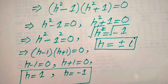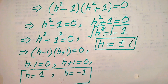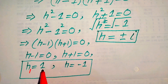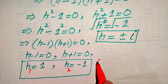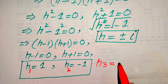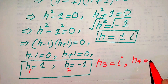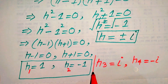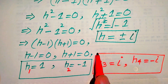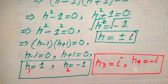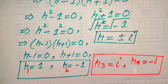So finally, the four roots of the given equation are: h1 equals 1, h2 equals minus 1, h3 equals plus iota, and h4 equals minus iota. These are the four roots of the equation, in which two roots are real and two roots are complex. This is the final answer. Thank you so much for watching this video, please subscribe to my channel for more exciting videos.